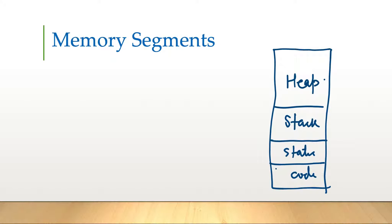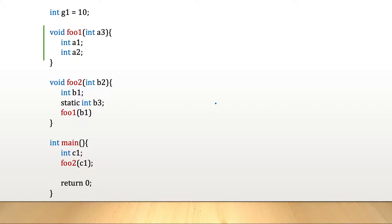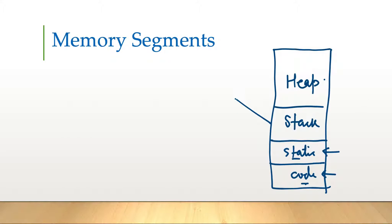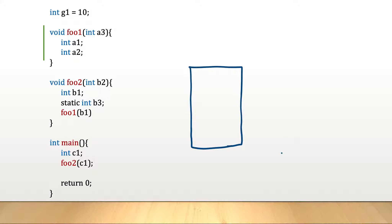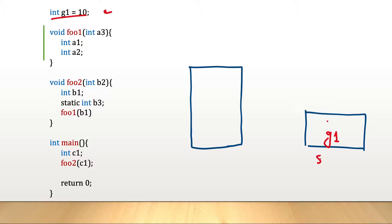The code and static segments are quite straightforward. For example, if we have this C++ code, when this application starts running, main is the first method that is invoked. We have expanded out the stack section. We also have the static or global section. Here, g1 is a global variable and it will remain in memory throughout the lifetime of this program, so g1 goes into the static or global section.